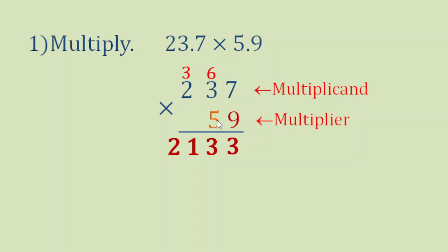And now we will multiply 5 to all the digits in our multiplicand as well. 5 times 7 is 35. Bring down 5, carry 3. Take note that our first entry here is on the tens place, because 5 here is on the tens place.